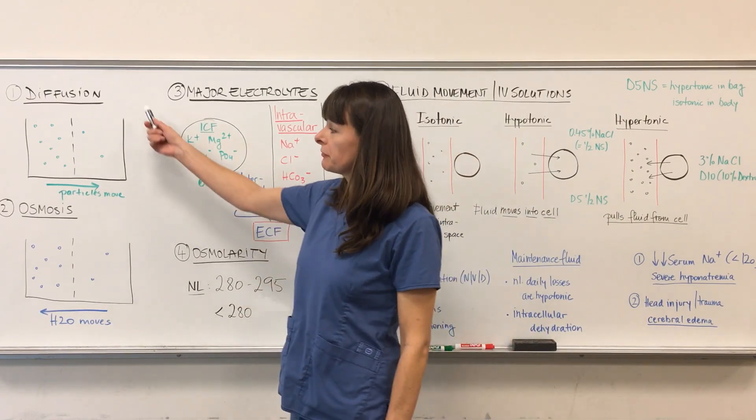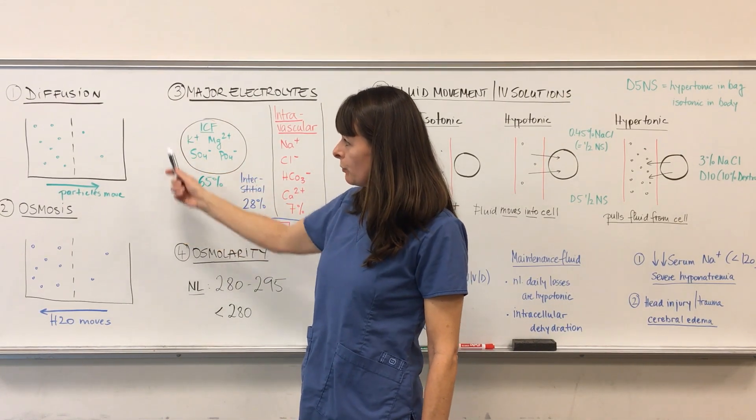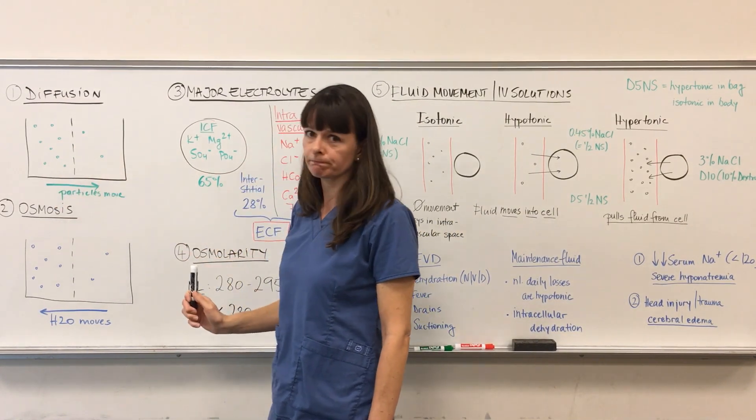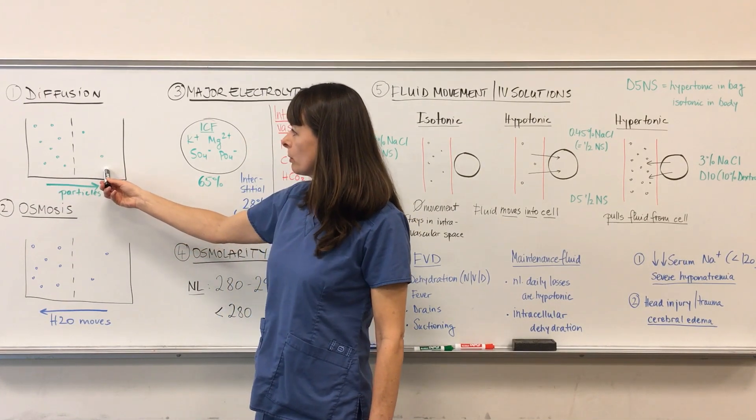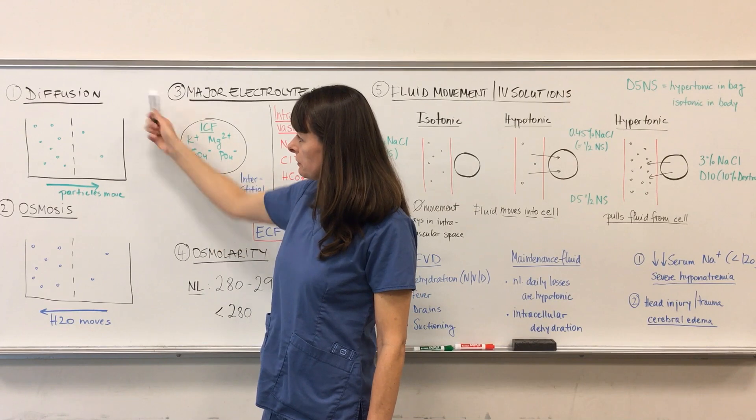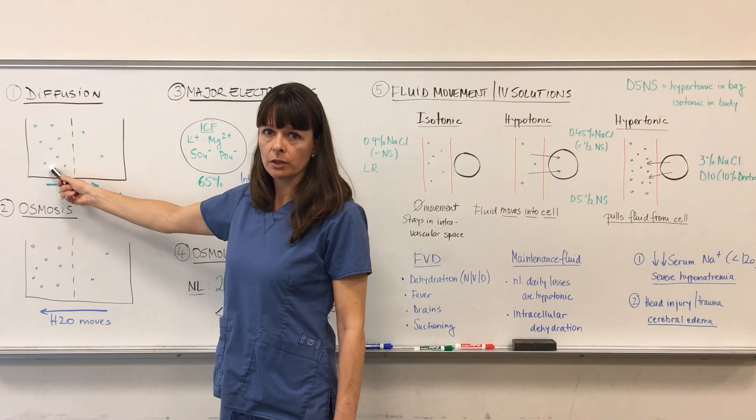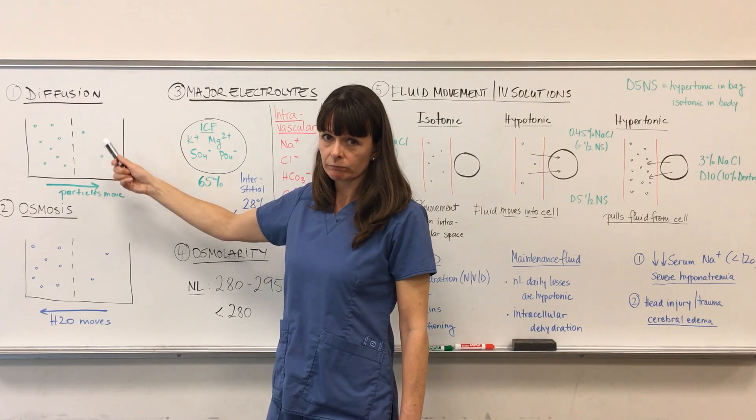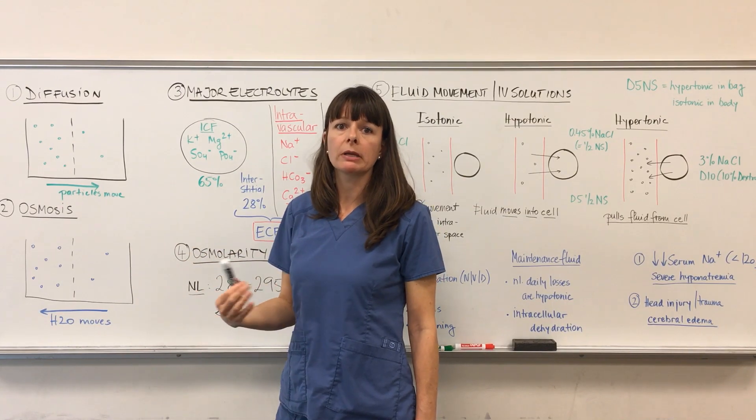So first of all, the principle of diffusion. Remember pathophysiology class or physiology class? It's a concept where you have a container and then we have a semi-permeable membrane in the middle. Now on one side we have a higher concentration of particles and on the other side of the semi-permeable membrane we have a lower concentration of these particles. By the principle of diffusion, the particles will move from the area of higher concentration to the area of lower concentration.